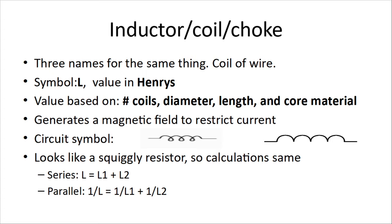The coil generates a magnetic field to restrict current. So the symbol looks like a squiggly resistor, more rounded. And so because it looks like a resistor, our formulas will be exactly the same. So the inductance in series of two coils is just the sum of the two. So two 100 Henry coils would equal 200 Henrys. And 200 Henrys would be a really big coil. A lot of it's measured in milli or micro Henrys.